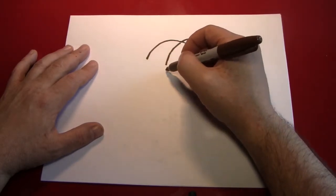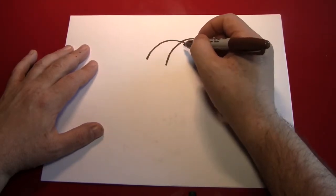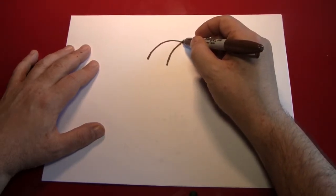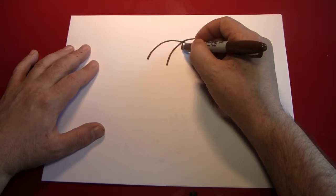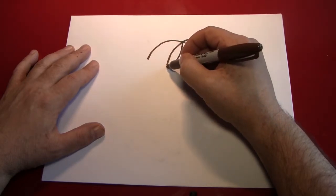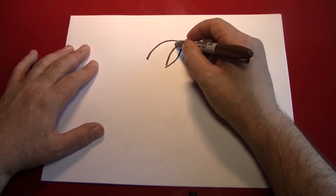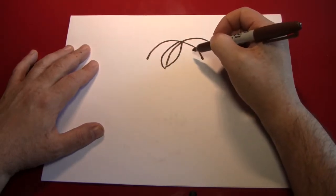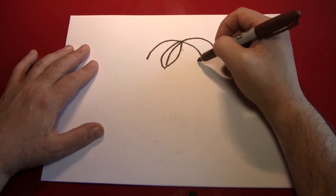So first let's build this leaf since it seems to be up front more than the others. Simply start here where the points converge. Come out a little bit and back in and do the same thing on the other side. Come over here and repeat the process.